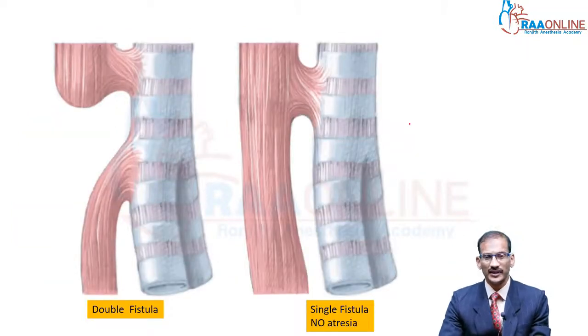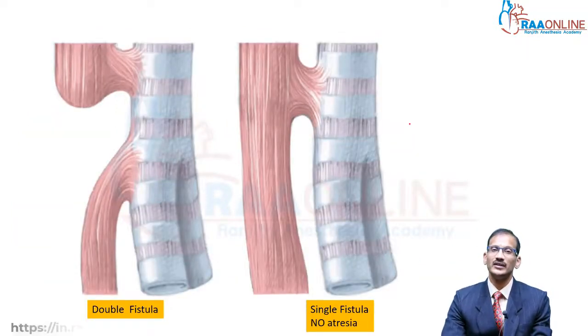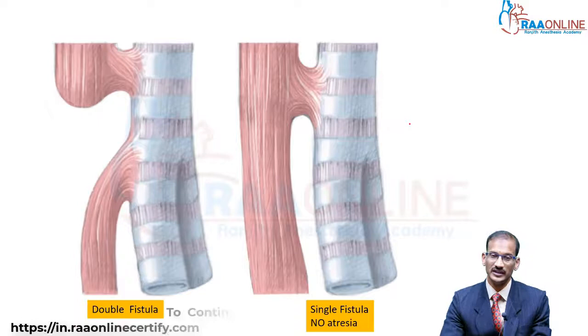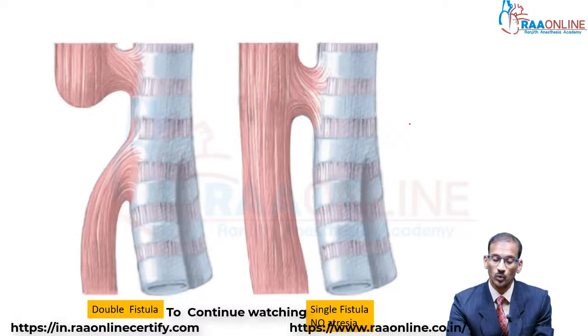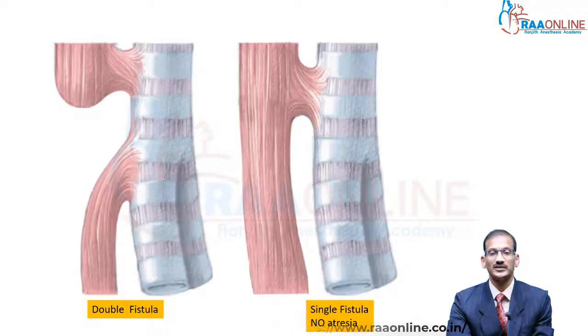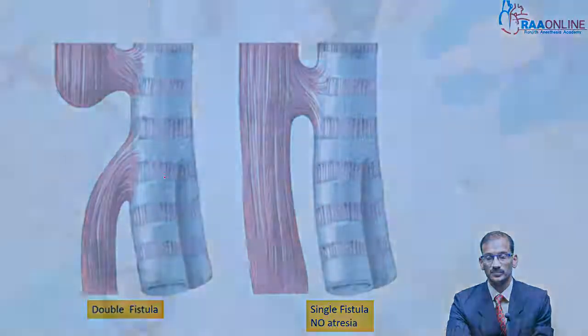The next situation is where you have a complete atresia but two fistulas — the proximal end is connected to the trachea and the distal end is also connected.